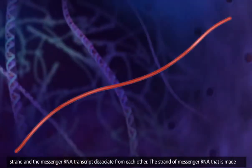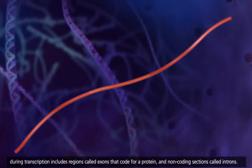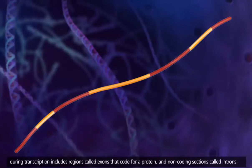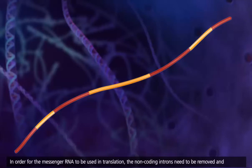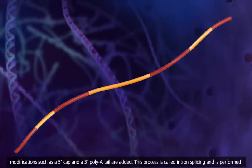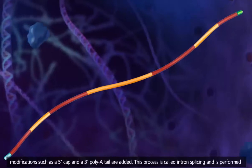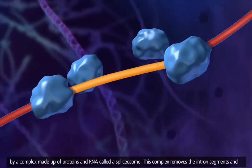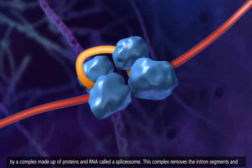The strand of messenger RNA that is made during transcription includes regions called exons that code for a protein, and non-coding sections called introns. In order for the messenger RNA to be used in translation, the non-coding introns need to be removed, and modifications such as a 5' cap and a 3' poly-A tail are added. This process is called intron splicing, and is performed by a complex made up of proteins and RNA called a spliceosome.